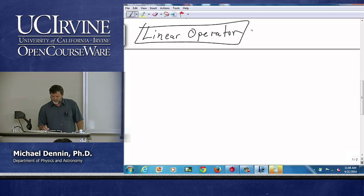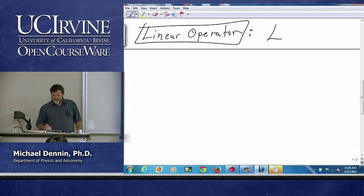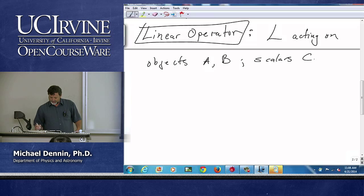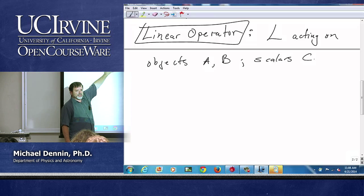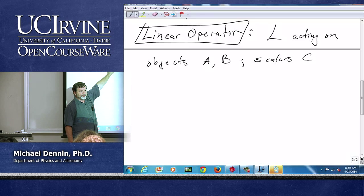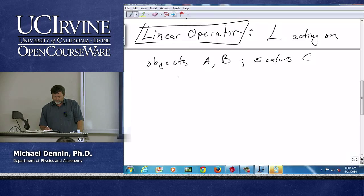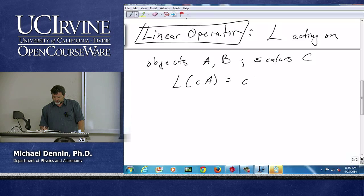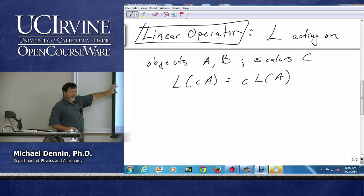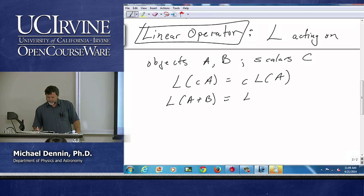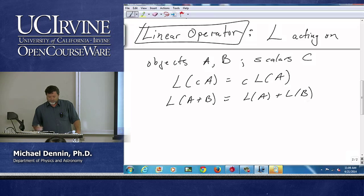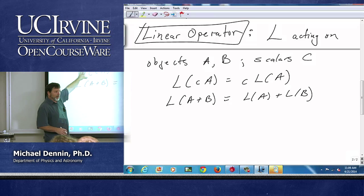We did write this down at one point, but recall our definition of a linear operator. We're going to call the linear operator L, and it's acting on objects A and B, and we'll talk about scalars C. If I have this linear operator, what are the two main things that define it? L of CA is the same as CLA. So the first is the way it deals with scalar multiplication. And the second: L acted on A plus B is the same as L on A plus L on B. That is all we need to define our linear operators.